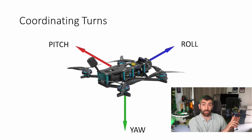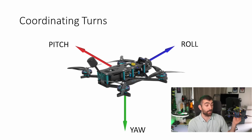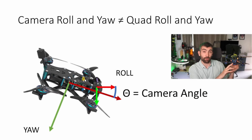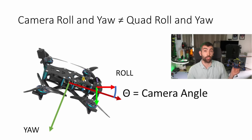We also have an FPV camera, and that camera has its own yaw, pitch, and roll axes. If the camera was at zero degrees — so we had no up tilt on the FPV camera — then the yaw, pitch, and roll axes of the camera would be identical to those of the quad, and we wouldn't need to coordinate our turns.